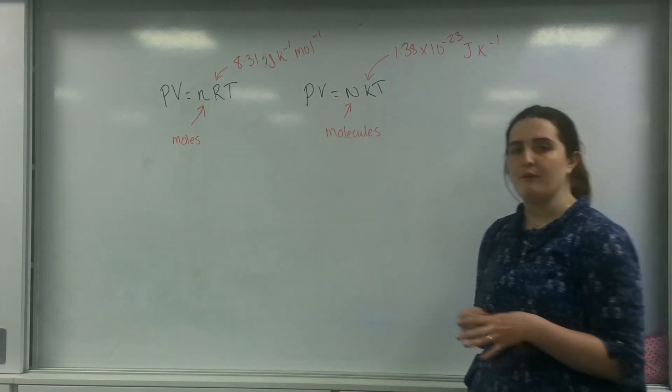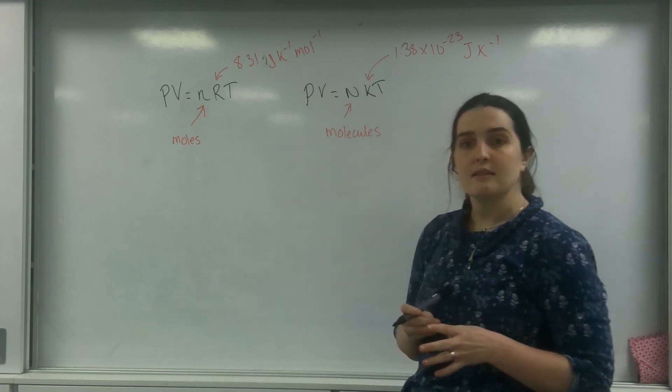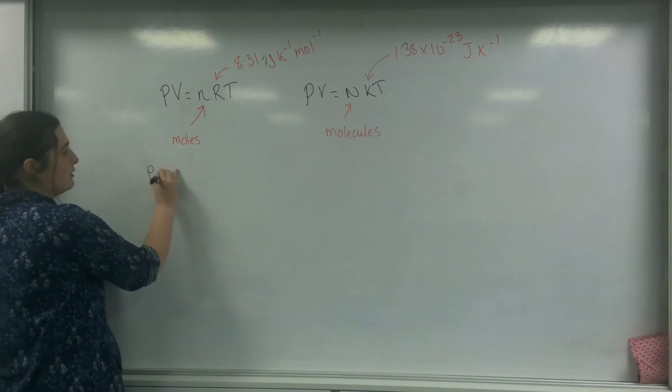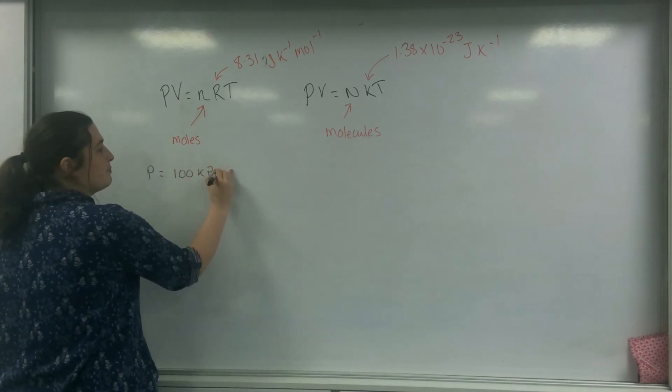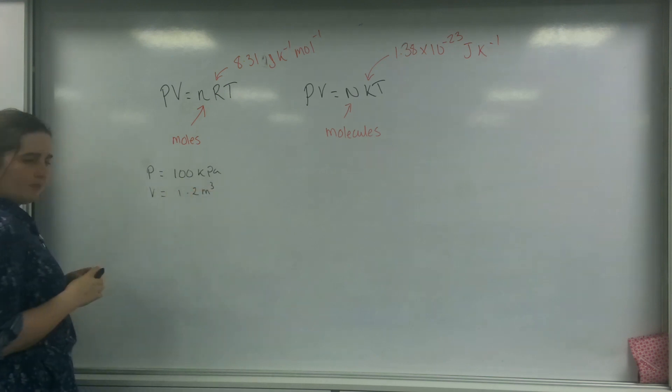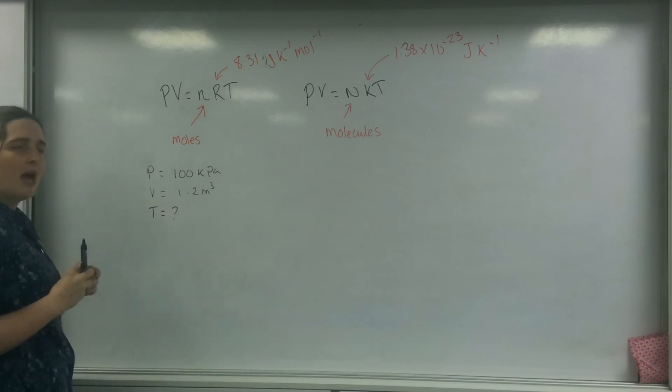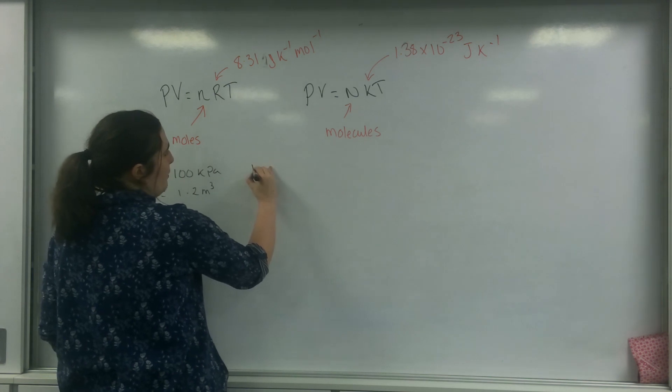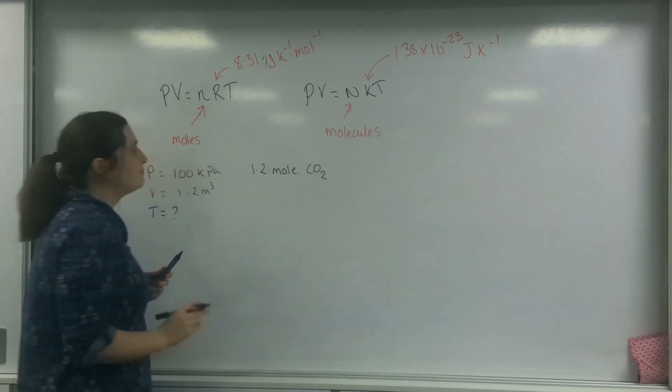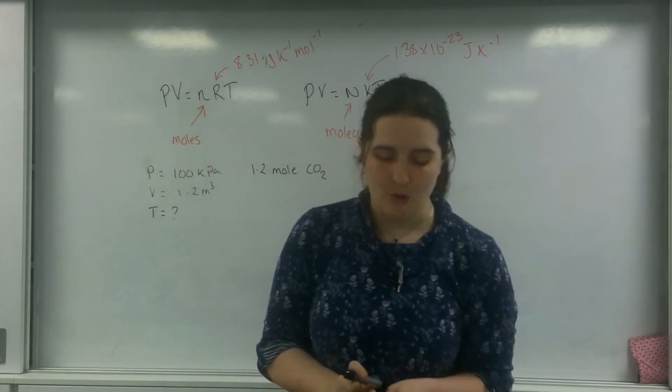So what I'm going to do is give you an example of how we use both of these. I'm going to use it in both senses and we're going to prove it's the same answer. So I have got a pressure of 100 kilopascals in a volume of 1.2 meters cubed, I don't know what temperature is, but I do know that I have got 1.2 moles of CO2 in there.